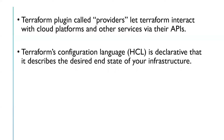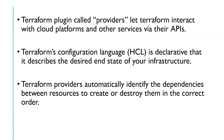Terraform's configuration language, HCL — HashiCorp Configuration Language — is declarative, meaning it describes the desired state of your infrastructure. We don't use JSON or Python; instead we use this simple language to configure our infrastructure on different cloud platforms. Terraform has its own dedicated language for this purpose.